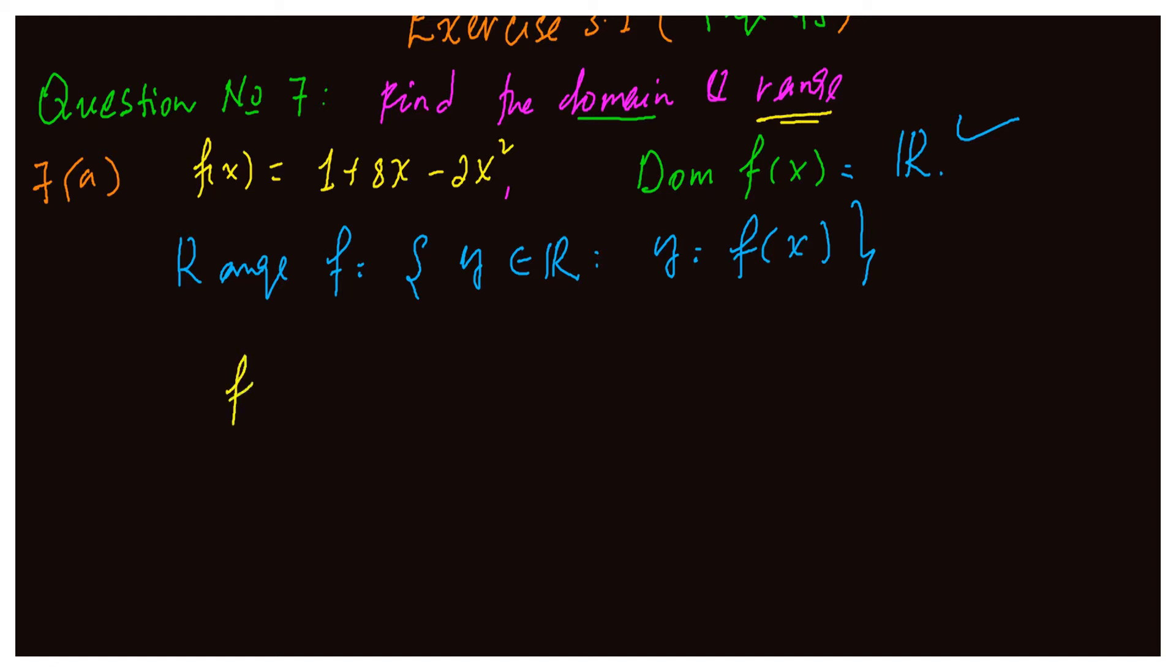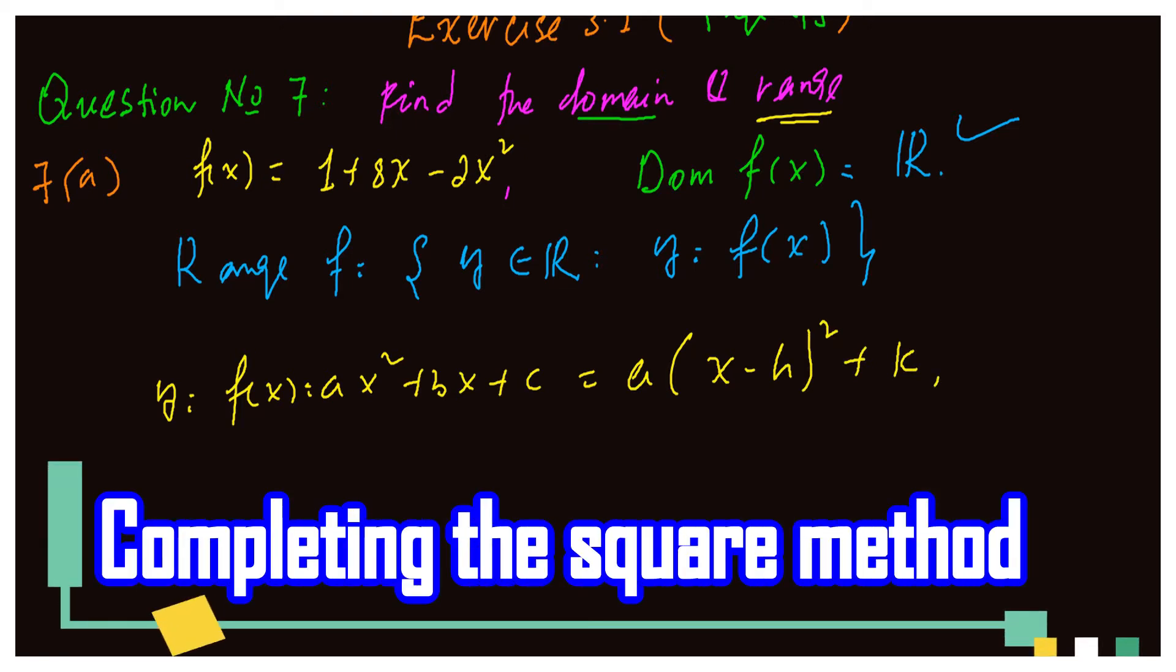You know that any quadratic function f(x), which is given as, in general, ax² + bx + c, it can be written as a(x - h)² + k. So this is the formula that we get by using the method called completing the square.